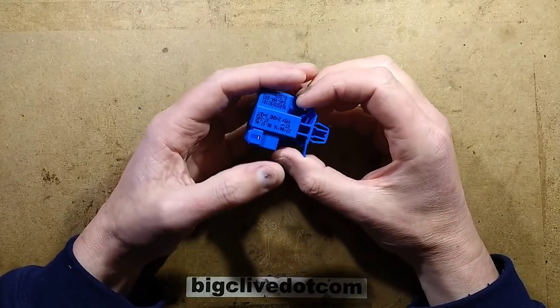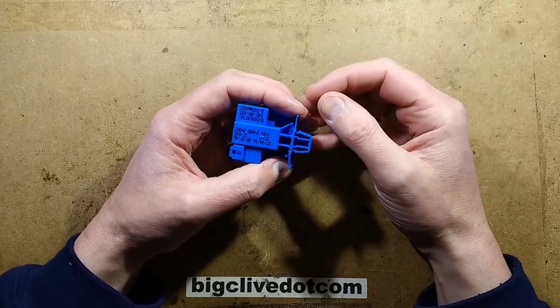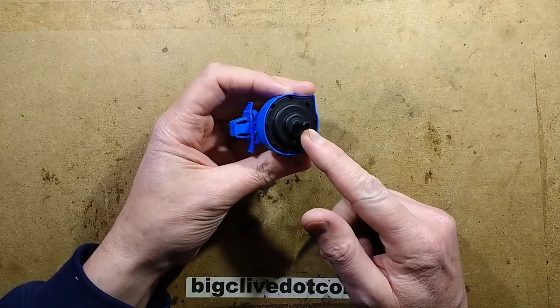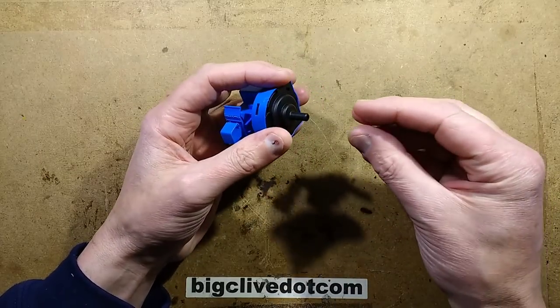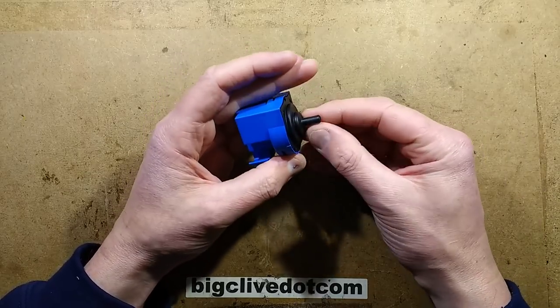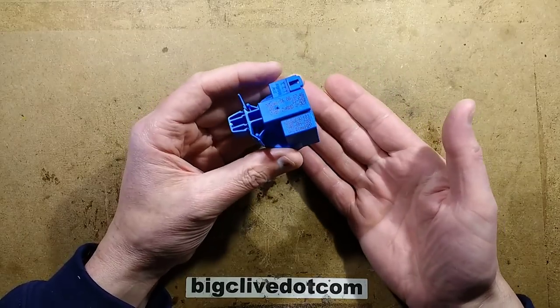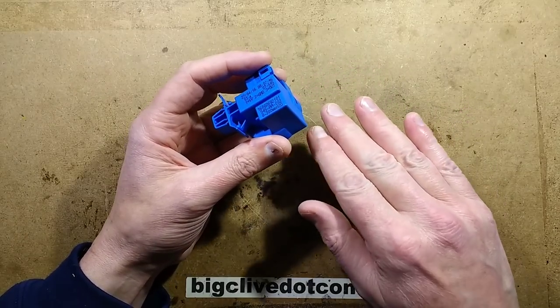In a recent video, I took apart my brand new washing machine just to show the components inside, and one of them was the water level switch. The water level switch works by having a pipe connected onto this unit here that goes down to the bottom of the drum.